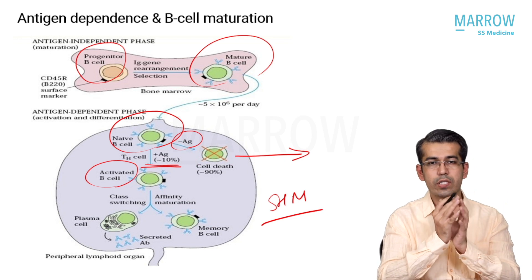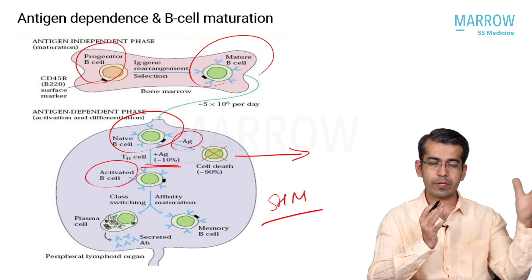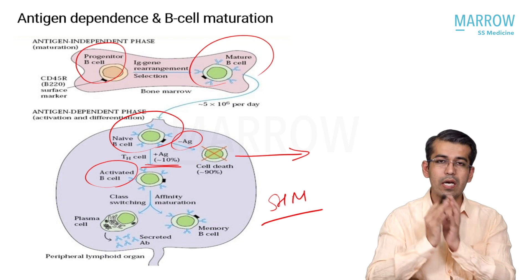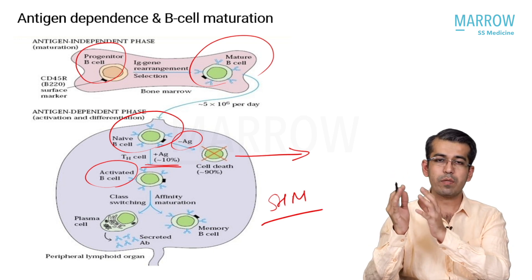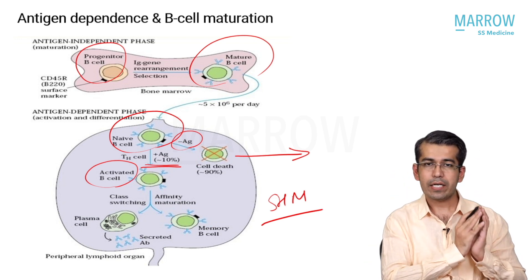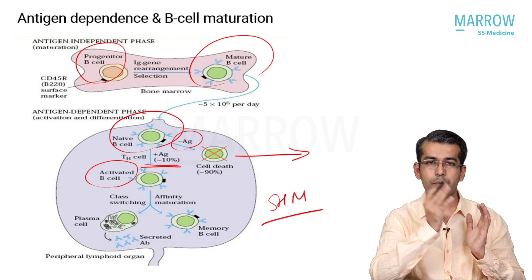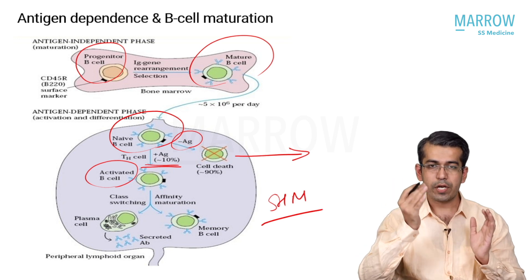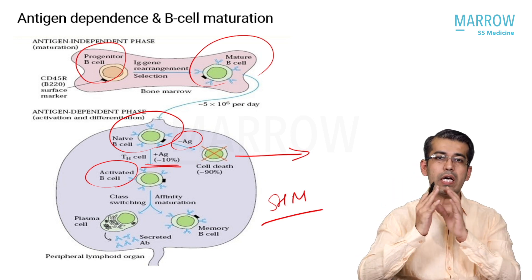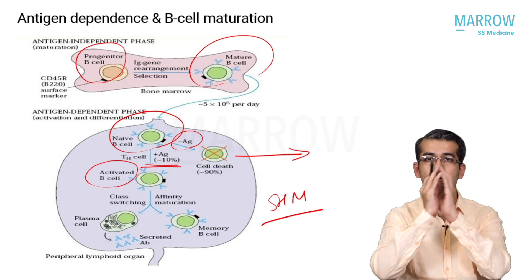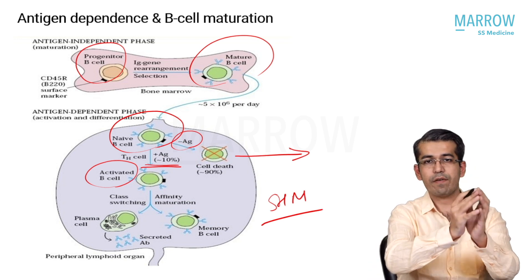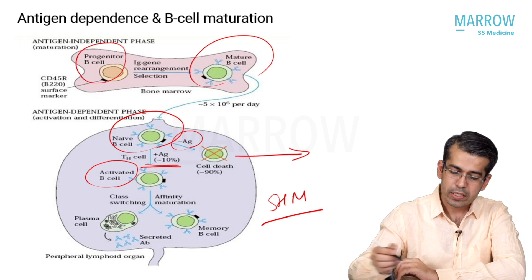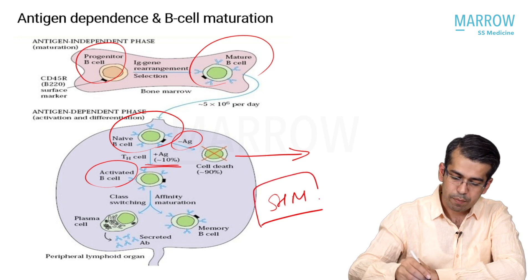It is called 'somatic' because it is not happening at the germline - it occurs after birth. 'Hypermutation' means that something present at the germline has been changed multiple times through a series of mutations to make it capable of identifying a specific antigen and mounting an immune response.